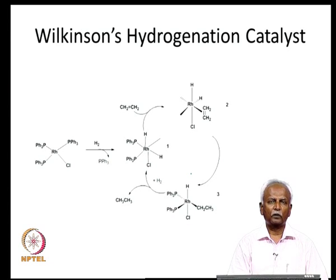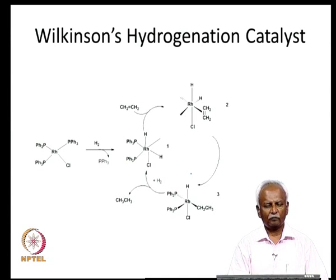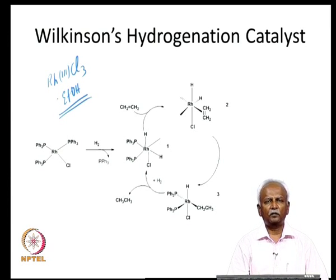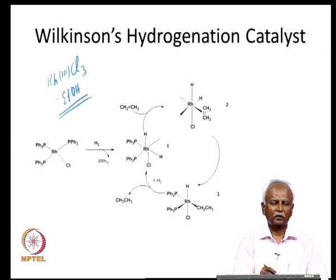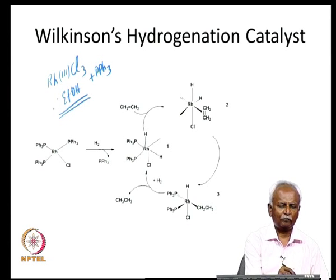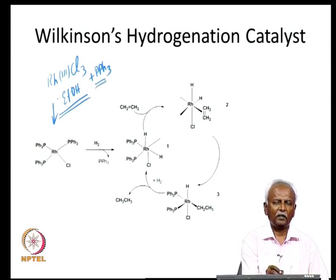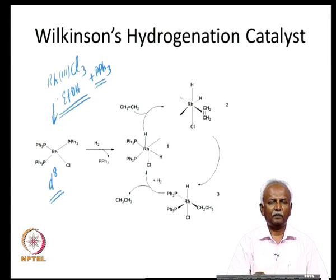More importantly, the Wilkinson catalyst can be used to carry out asymmetric hydrogenations, which is the reason why it is extremely popular. The basic Wilkinson catalyst is readily prepared in the laboratory starting with rhodium trichloride and ethanol. Just refluxing these two compounds together in the presence of PPh₃ generates the rhodium(I) complex. The rhodium(III) becomes rhodium(I) because of a reduction reaction, and PPh₃ stabilizes the rhodium(I) species formed. You end up with a d⁸ system stabilized in a square planar geometry.